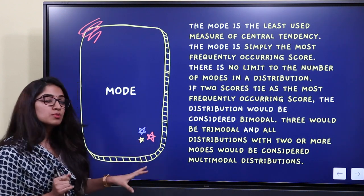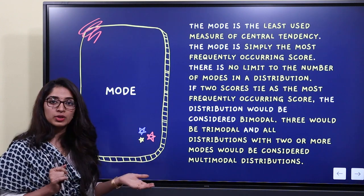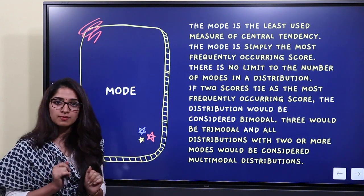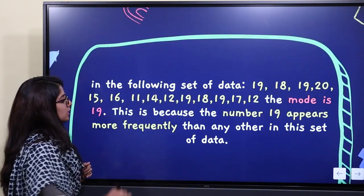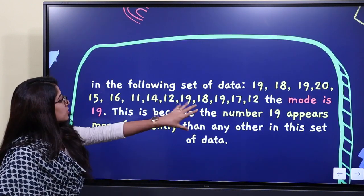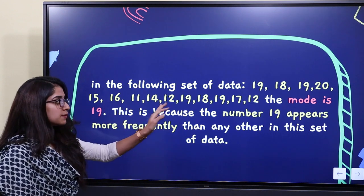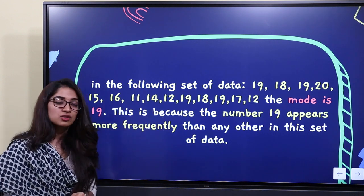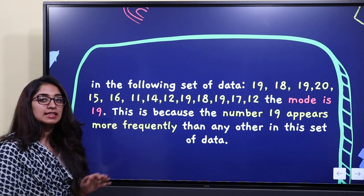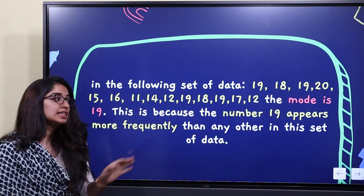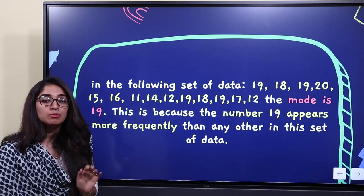All distributions with two or more modes are called multimodal distributions. Looking at this data set, the most frequently occurring value is 19, so the mode of this data set is 19.